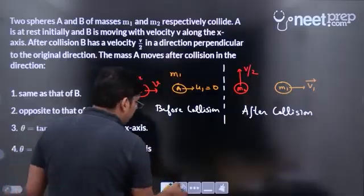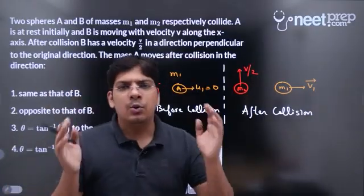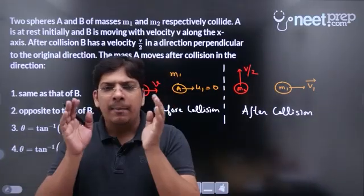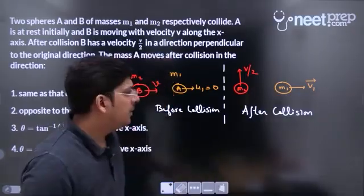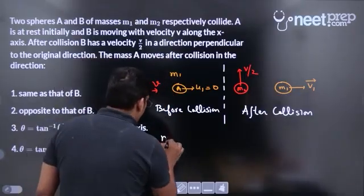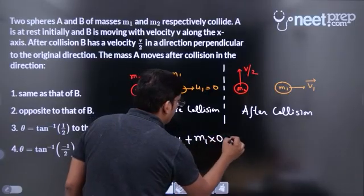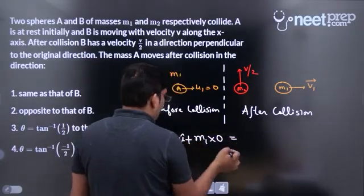Let us conserve the momentum here because in any type of collision the total linear momentum remains conserved. This is m2 into v, m1 into 0 equals to, let it be i cap only because momentum is a vector quantity.